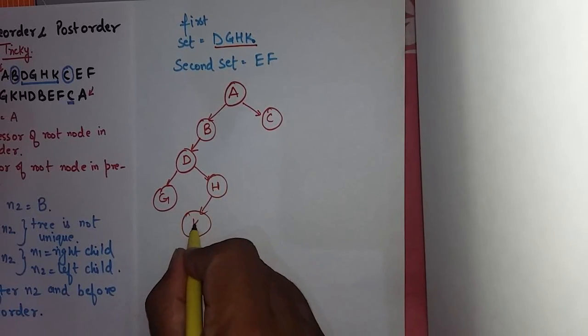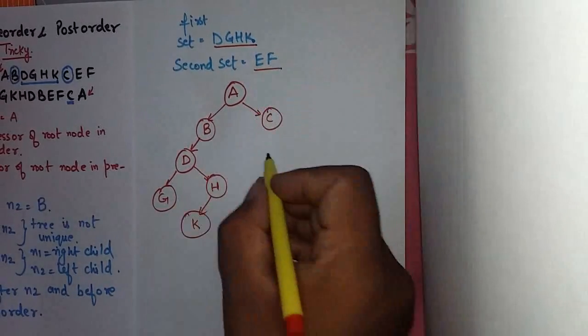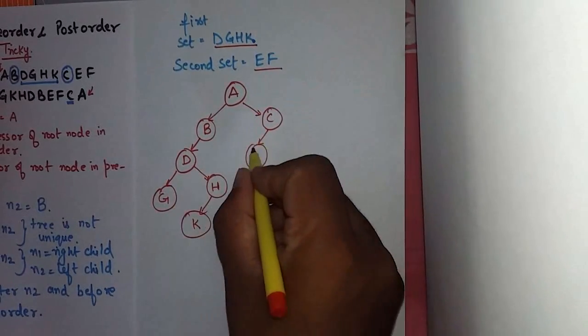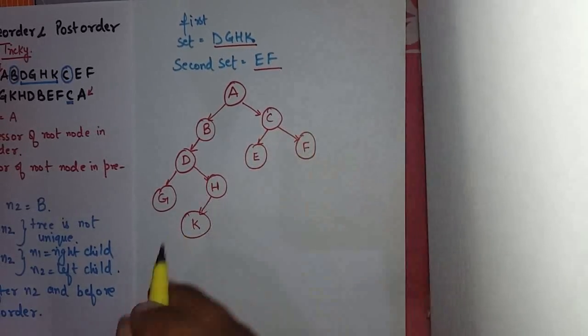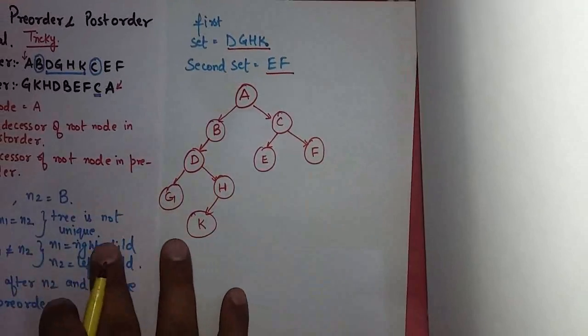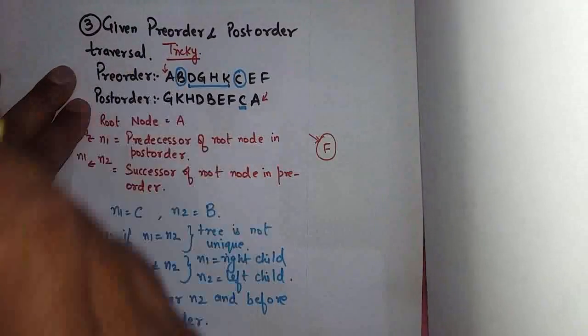H, and from C we have the set EF, E, F. So this is the way we create a binary tree when pre-order and post-order traversal are given.